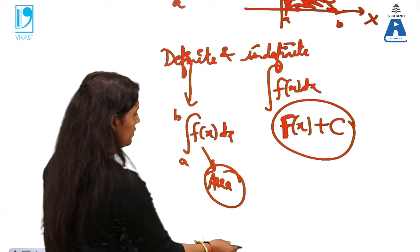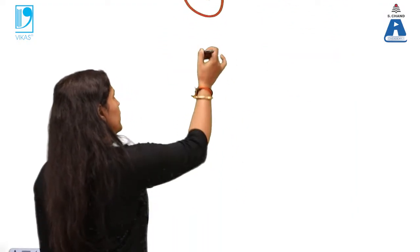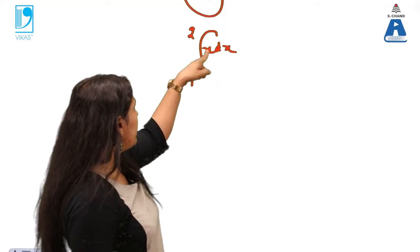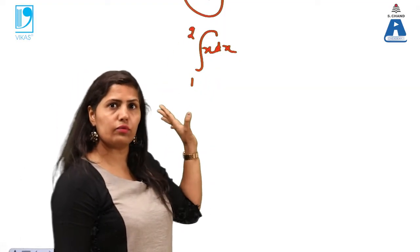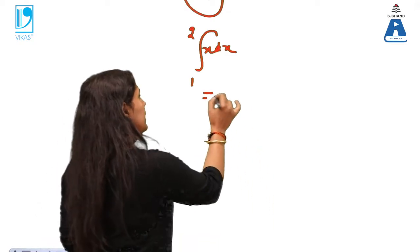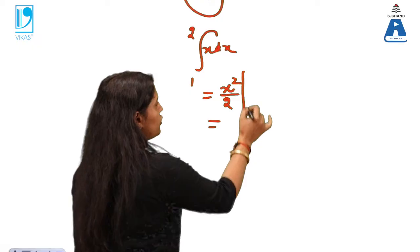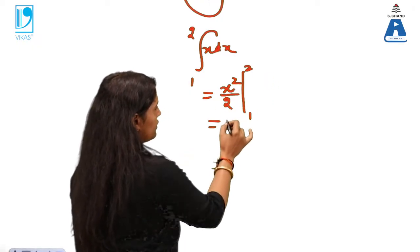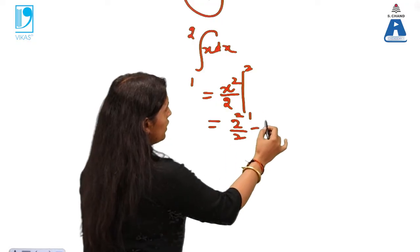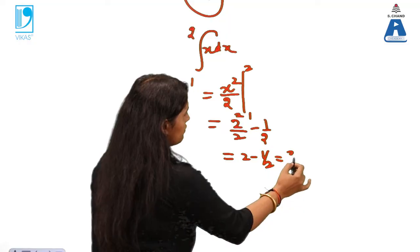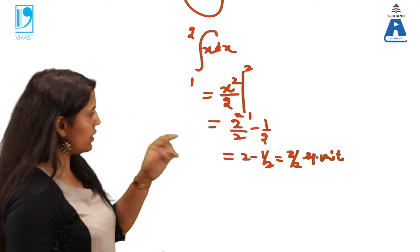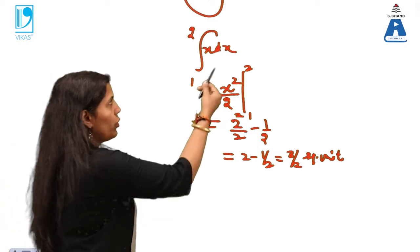Consider ∫ from 1 to 2 of x dx — there is no problem here. Integrating x with respect to x gives x²/2. Applying the limits: upper limit first, so (2²/2) − (1²/2) = 2 − 0.5 = 3/2. The answer is 3/2 square units. Since there is no issue with the function or the limits, this is a proper integral.